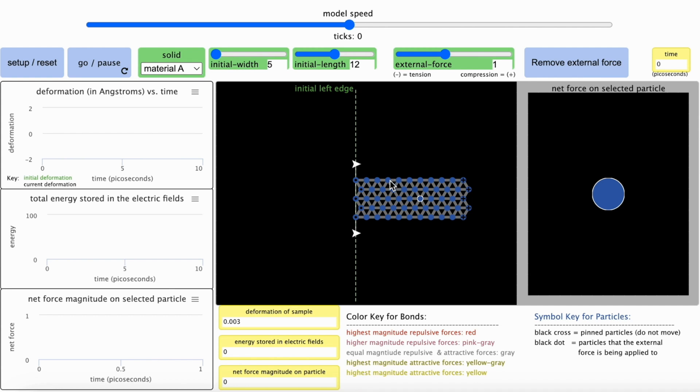Each blue dot represents a particle, either an atom or group of atoms, arranged in a repeating pattern. The lines represent bonds between neighboring particles due to the electrical forces between them.